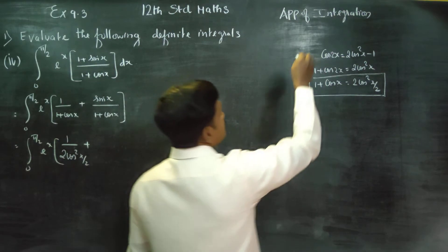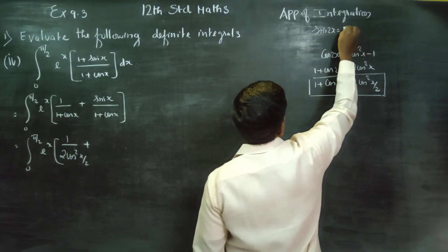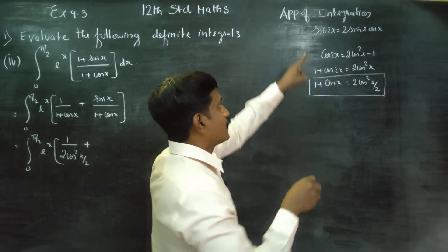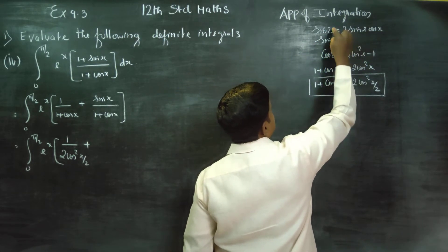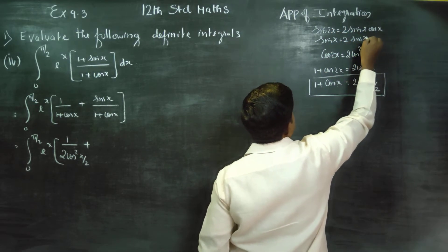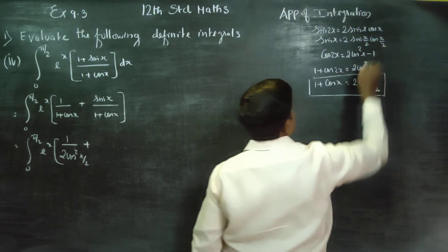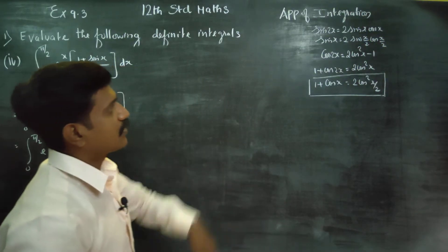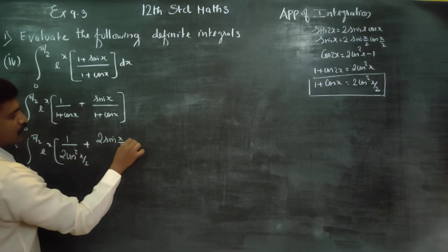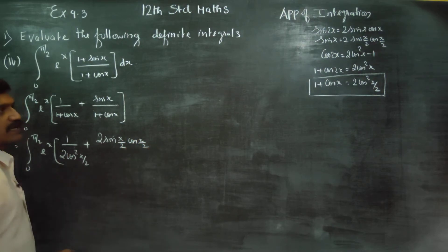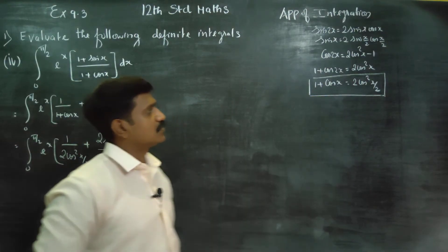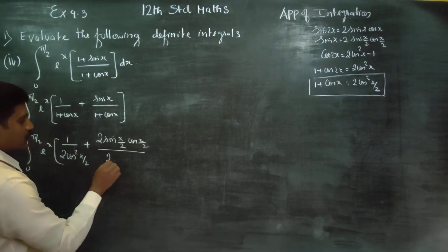Now, we also recall the sin double angle formula. Sin 2x = 2sinx·cosx. Replacing x with x/2, sinx = 2sin(x/2)·cos(x/2). And 1 + cosx = 2cos²(x/2). These are the two formulae we require for this problem, both from 11th standard.